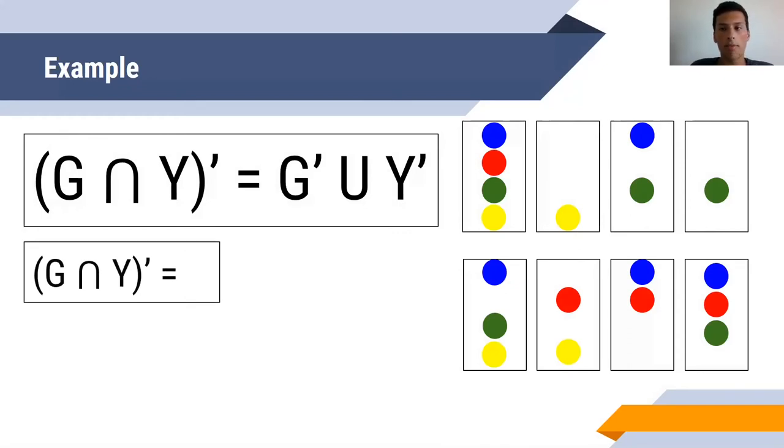We're going to take the cards that have both green and yellow. That's one here, two there. But since it's prime, we're going to look at the other cards, not these two. So we're left with six here.